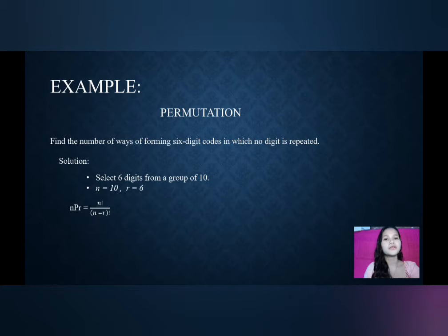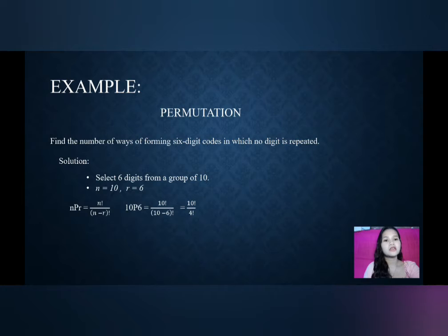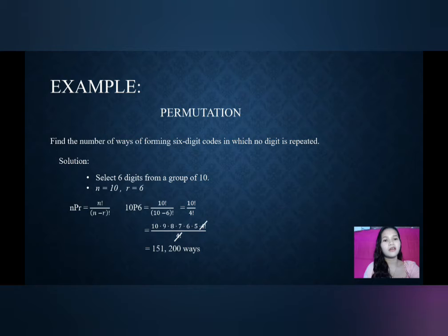Using the formula nPr is equal to n factorial over the quantity (n minus r) factorial, we have 10P6 is equal to 10 factorial over the quantity (10 minus 6) factorial, which is equal to 10 factorial over 4 factorial. That gives us 10 times 9 times 8 times 7 times 6 times 5 times 4 factorial, and we cancel out the 4 factorial from the numerator and denominator. So, 10 times 9 times 8 times 7 times 6 times 5 is equal to 151,200 ways of forming 6-digit codes in which no digit is repeated.